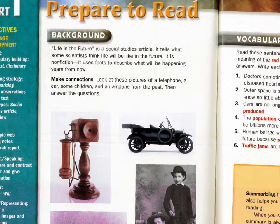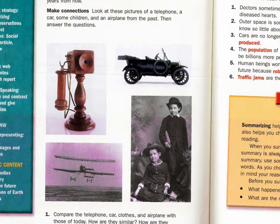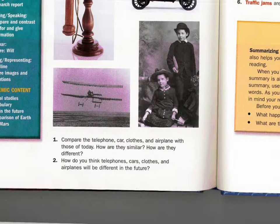Let's make some connections. Look at the pictures of a telephone, a car, some children, and an airplane from the past. Things are different now, aren't they? So of course things will also be different in the future. Compare the telephone, car, clothes, and airplane with those of today — how are they similar? How are they different? How do you think telephones, cars, clothes, and airplanes will be different in the future? These are not just questions to say 'uh-huh, sure' — you need to actually answer them.